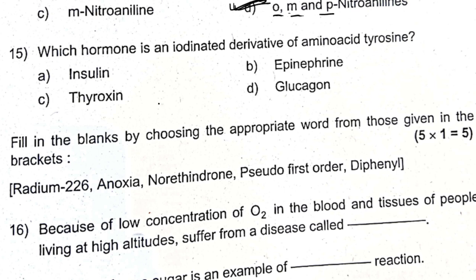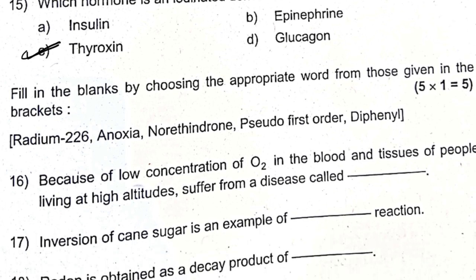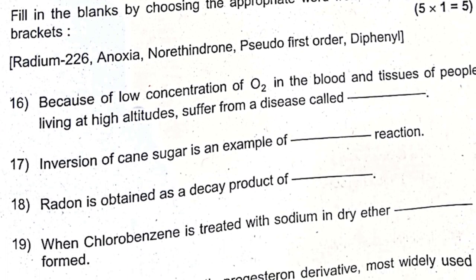Which hormone is the iodinated derivative of the amino acid tyrosine? The hormone is thyroxine — thyroxine is the answer. Fill in the blank: because of low concentration of oxygen in the blood and tissues of people living at high altitude, they suffer from a disease called anoxia.